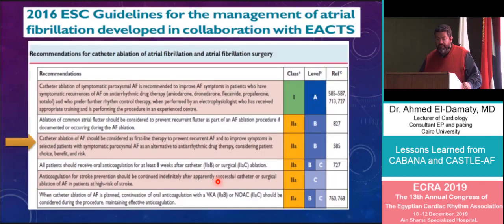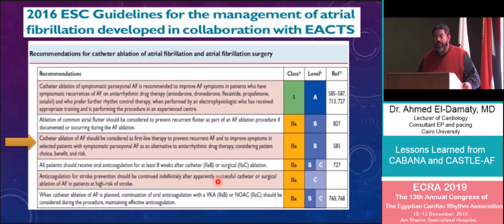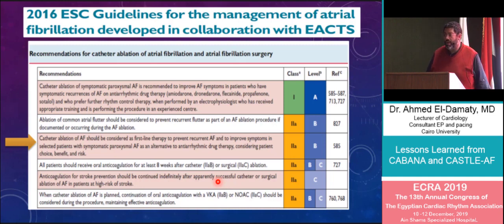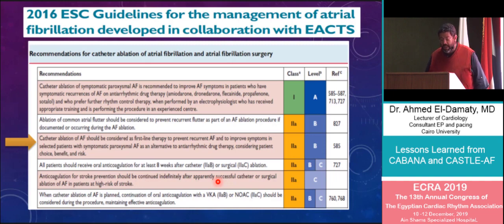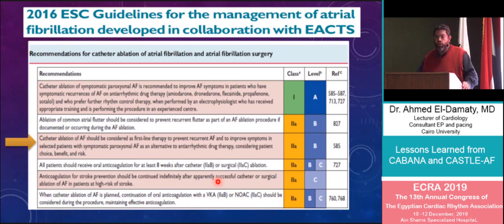In view of this cumulative evidence, where are we in terms of intervention for atrial fibrillation? Catheter ablation is now indicated as a class 1 indication for symptomatic atrial fibrillation that has failed at least one antiarrhythmic drug, and it can also be a substitute for antiarrhythmic drugs in patients who prefer not to be on such drugs lifelong.